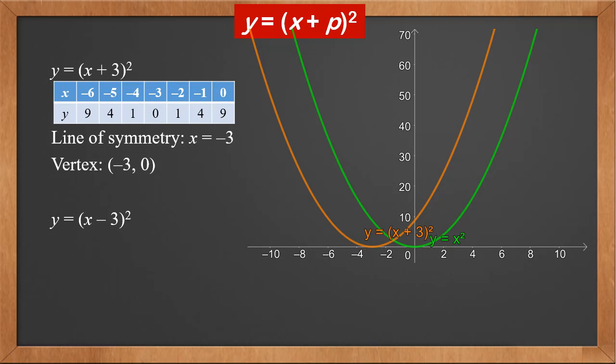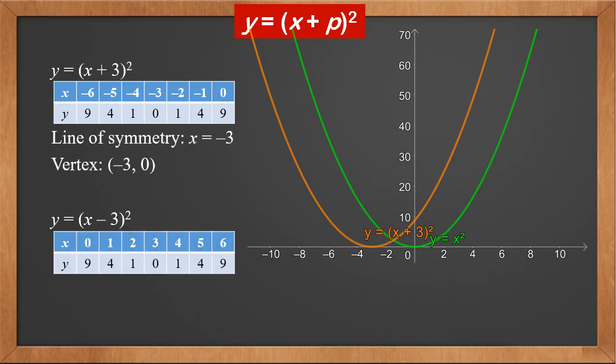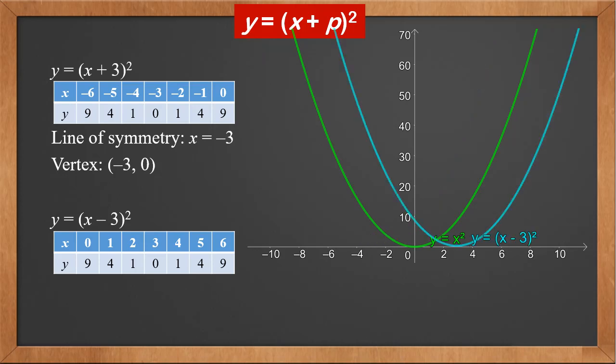Next, let's look at y equals (x minus 3) squared. This is a complete square and 3 makes it 0. Therefore, we find values around 3. x values are 0, 1, 2, 3, 4, 5, 6. y values are 9, 4, 1, 0, 1, 4, 9. We can see that it's y equals x squared moved right along the x axis by 3. The line of symmetry becomes x equals 3, and the vertex is (3, 0).